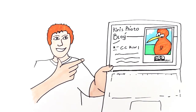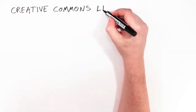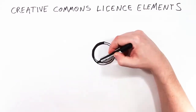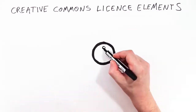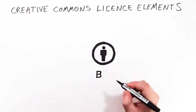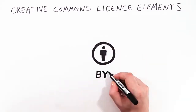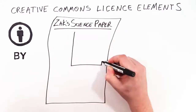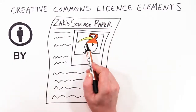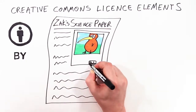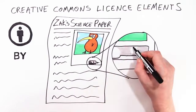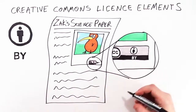There are more rules Kiri could have included. Creative Commons licenses are made up of license elements — you can think of them as rules, and each has its own special symbol. This is attribution. It means that Zach must acknowledge Kiri when he publishes his science project containing her photo.